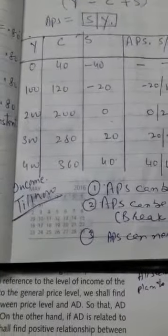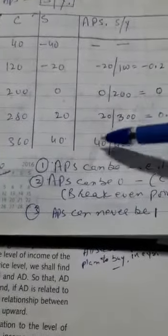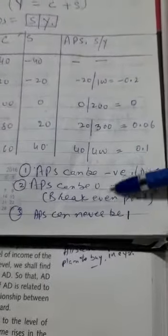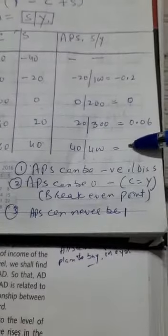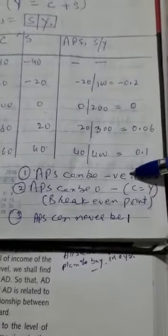Now, important is that what have you understood? That means, what are the conclusions derived? Number 1, APS can be negative. Why? Because of this saving. See, in this case.